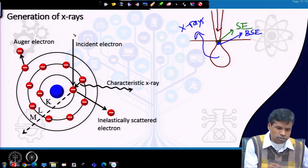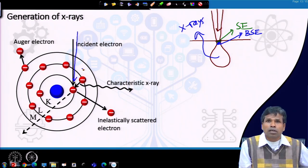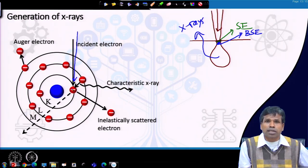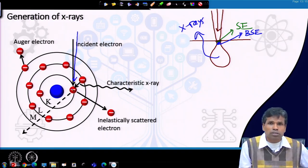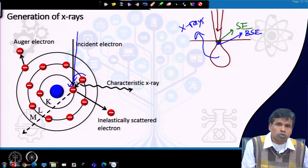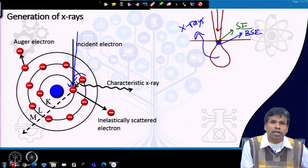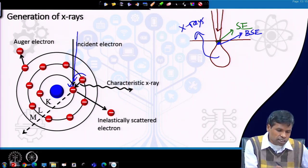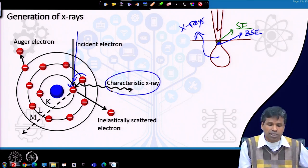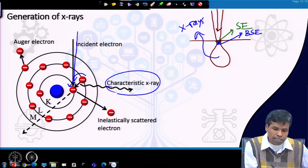The incident electron can knock off an inner shell electron, creating a vacancy. Once a vacancy is created, the atom is in an excited state and would like to return to its ground state — relaxation occurs. An electron present in the outer orbital can jump back to fill the inner shell vacancy, losing its energy in the form of characteristic X-ray energy. This is specific to a particular atom and a particular transition, which is why we call it characteristic X-rays.